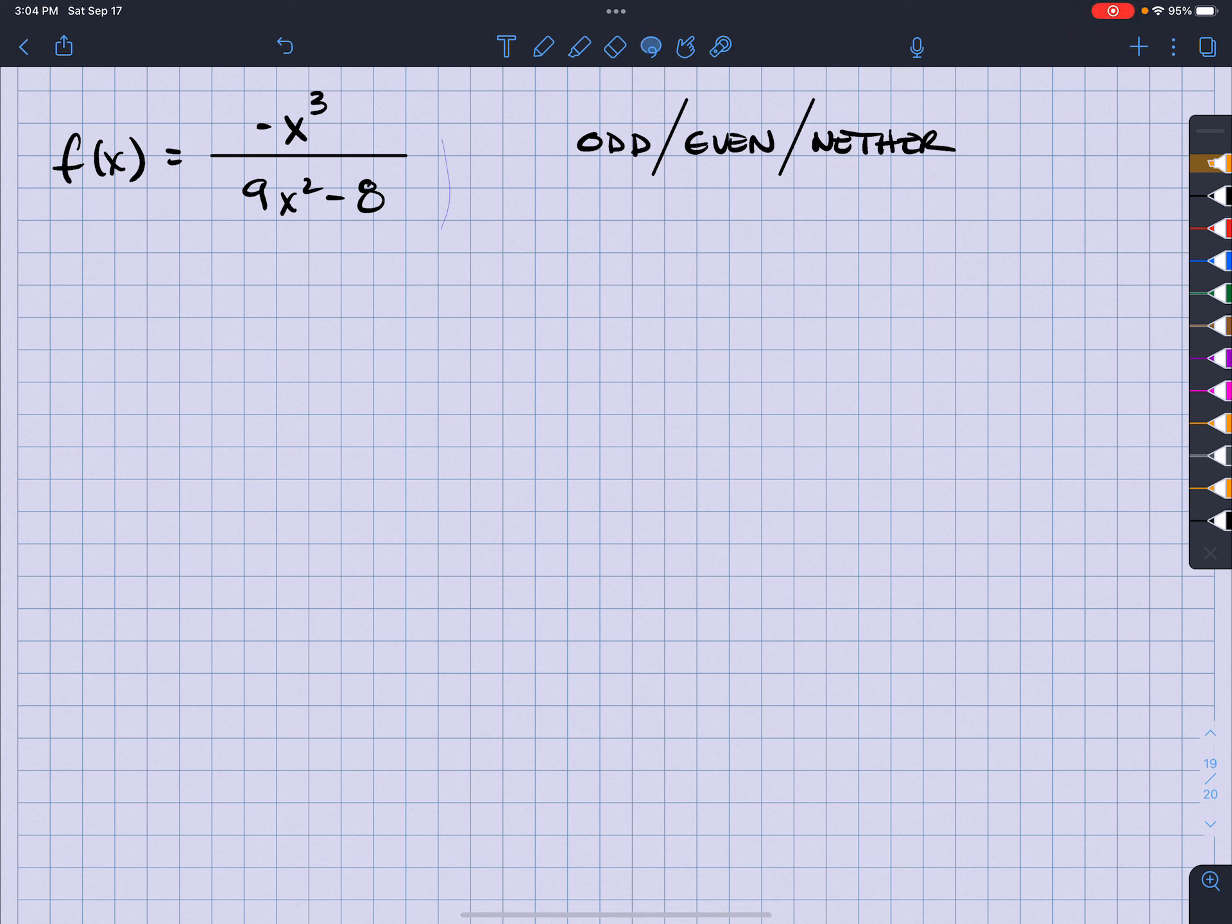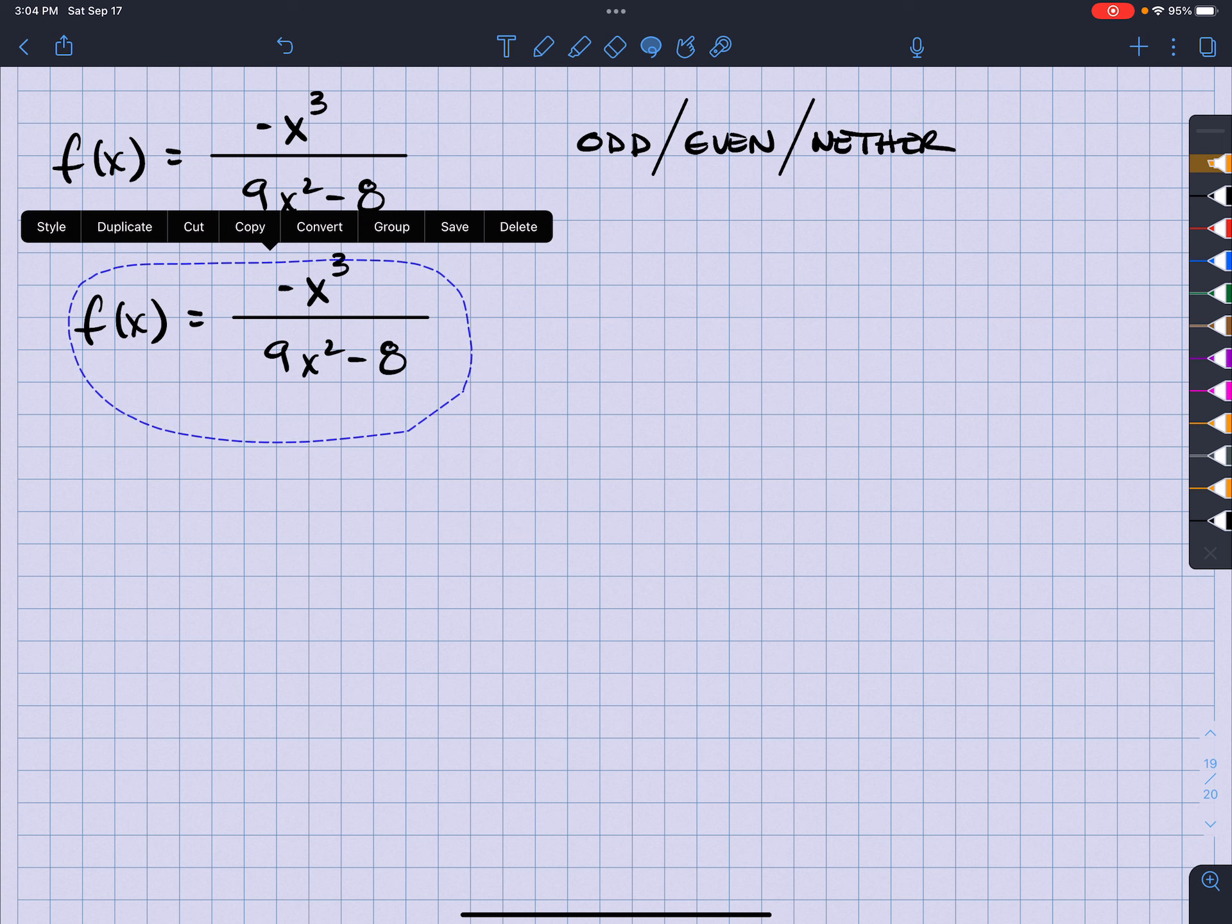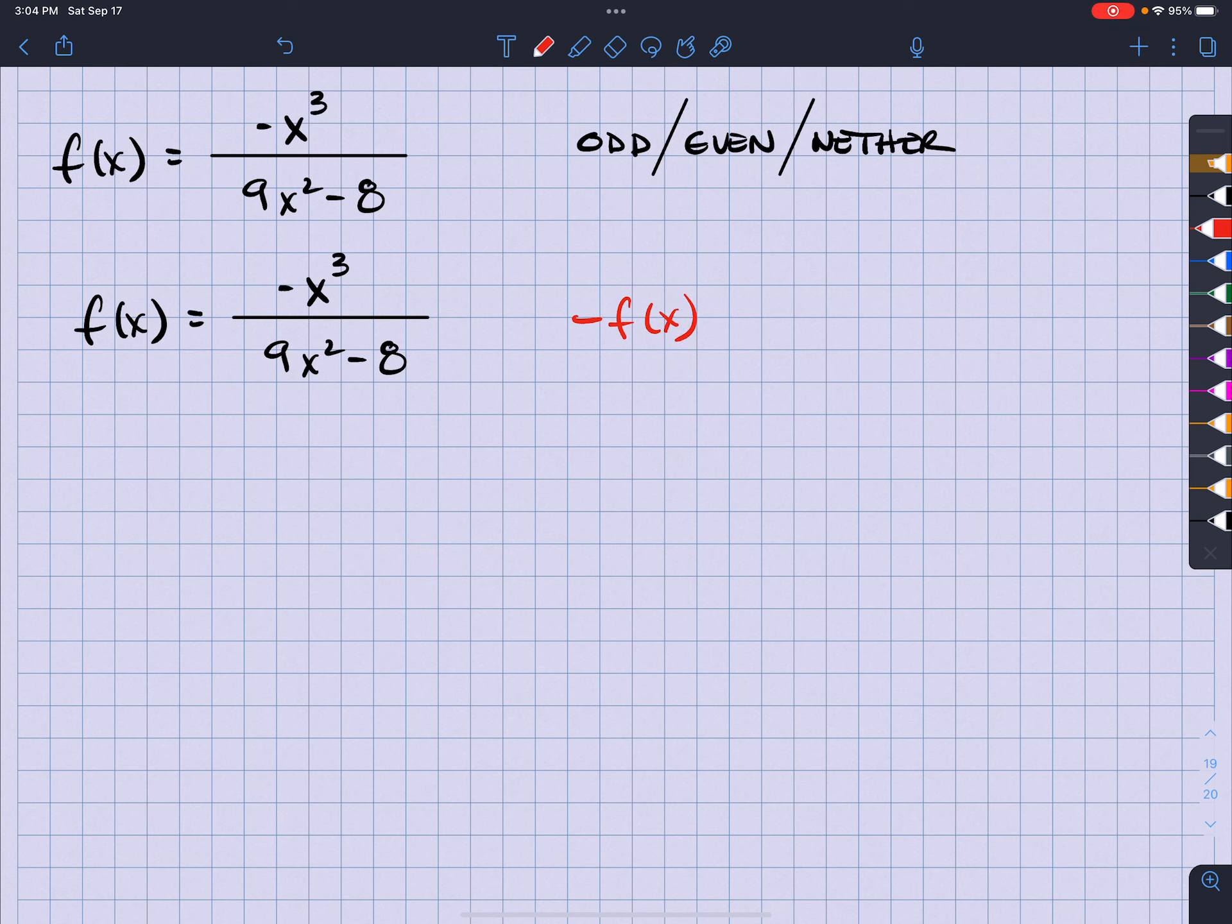So the first thing I would do is that I would first keep this. But more importantly, I have to find negative f of x. So I gotta negate that, so I just negate the top. So I'm gonna have x to the third over 9x squared minus 8.